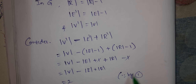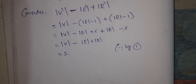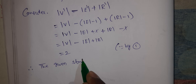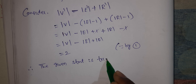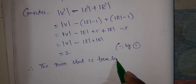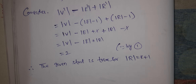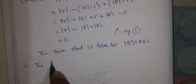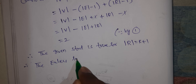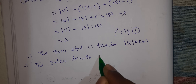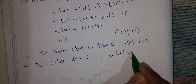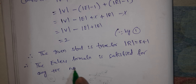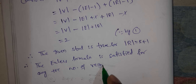Since by equation 1, this equals 2. Therefore, the given statement is true for R equals k plus 1. Therefore, Euler's formula is satisfied for any number of regions.